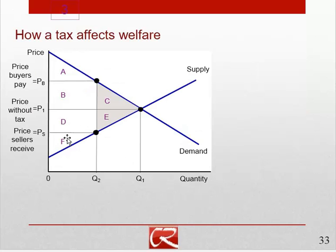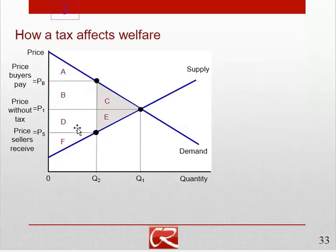When we have the tax, buyers pay an effective price of P sub B. So once we have the tax in place, consumer surplus is this smaller triangle A, which is above P sub B and below the demand curve. Producer surplus is everything below P sub S and above the supply curve. B and D are equal to the amount of the tax times the number of transactions, so B plus D is overall government revenue.